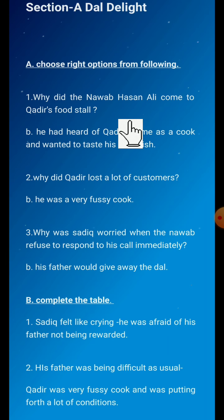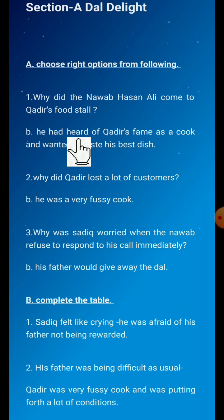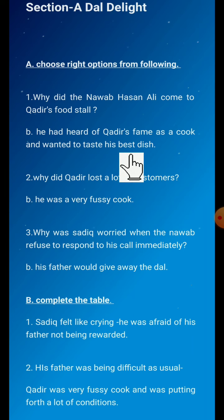First question: Why did Nawab Hasan Ali come to Kadir's food stall? Options given are: (a) he wanted to taste Kadir's famous fritters, (b) he had heard of Kadir's fame as a cook and wanted to taste his best dish, (c) he wanted to taste Kadir's best dish, or (d) he wanted to give him some money. The correct answer is option B — he had heard of Kadir's fame as a cook and wanted to taste his best dish.